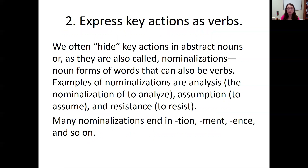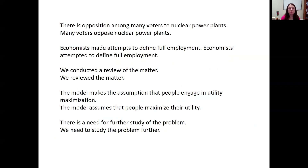Moving on to the second principle: express key actions as verbs. We often hide key actions in abstract nouns, or nominalizations — noun forms of words that can also be verbs. Some examples are 'analysis' from 'analyze,' 'assumption' from 'assume,' and 'resistance' from 'resist.' You can find nominalizations because they tend to end in '-tion,' '-ment,' or '-ance.' So words like analysis, assumption, resistance.